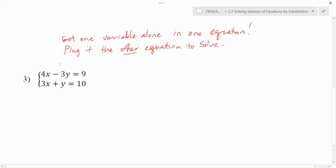What you have to do is you need to get one variable alone in one equation. And then you need to plug it in for that variable in the other equation. So if I'm looking at problem number three, I can get this x alone, I can get this y alone, I can get this x alone, or I can get this y alone. Any one of these will work, but you need to get one variable alone in one equation.